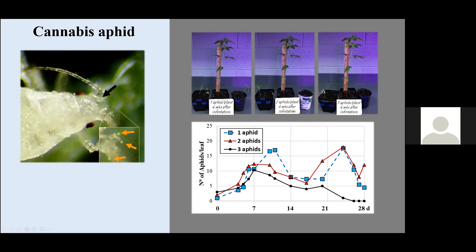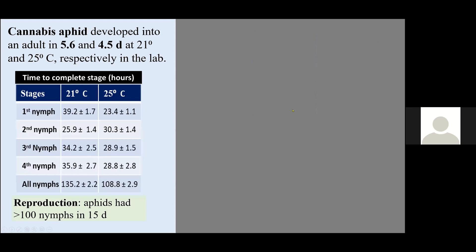We tried to find research-based data on how long these insects develop. There's no reports on that. We found that at 21 and 25 degrees Celsius, these aphids complete the life cycle in 5.6 and 4.5 days. They are very rapid. They have rapid population growth in the laboratories. Furthermore, they are very prolific. We only checked up to 15 days and they have high reproduction rates.